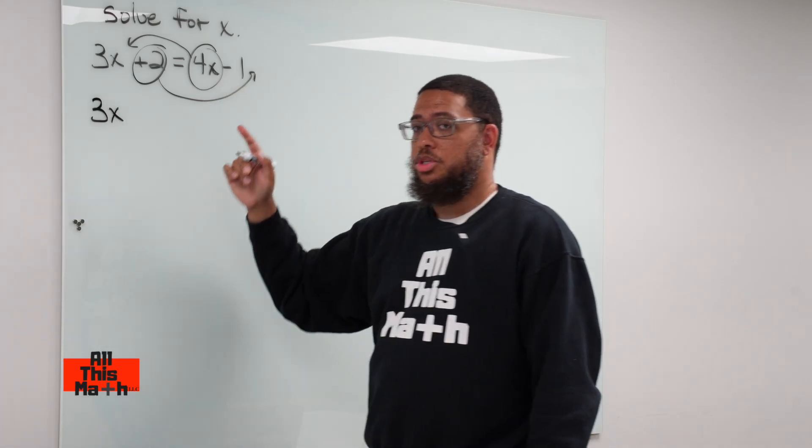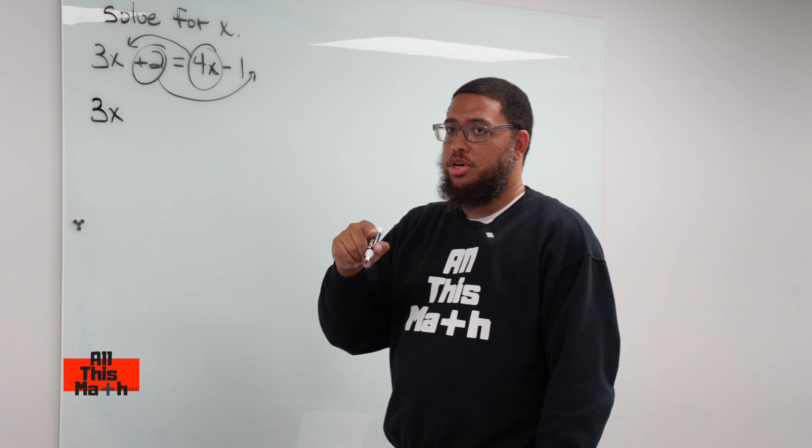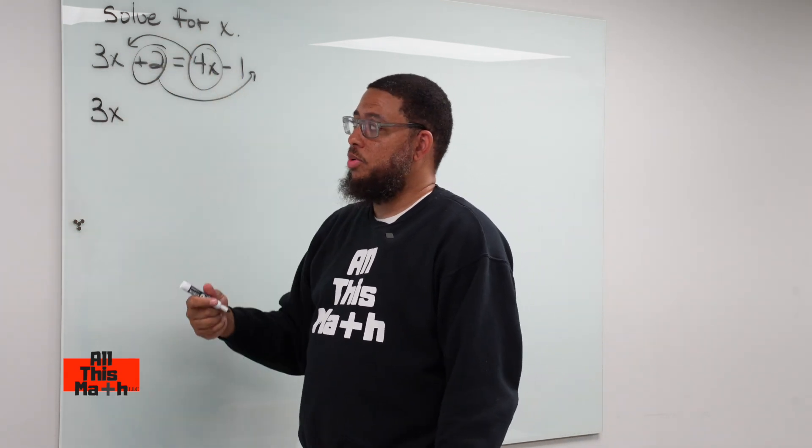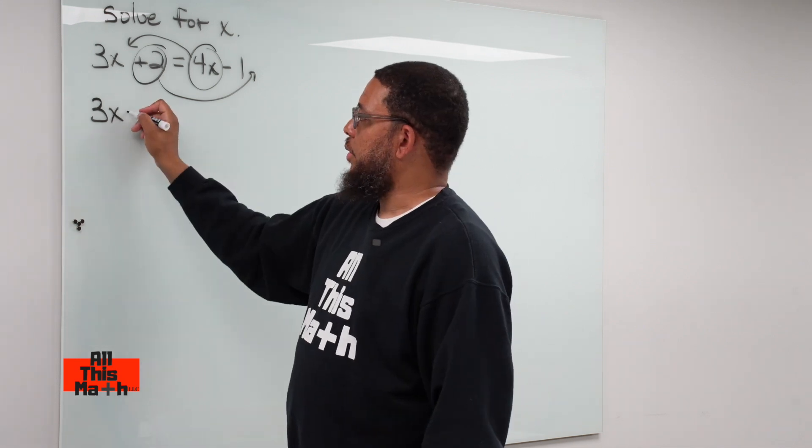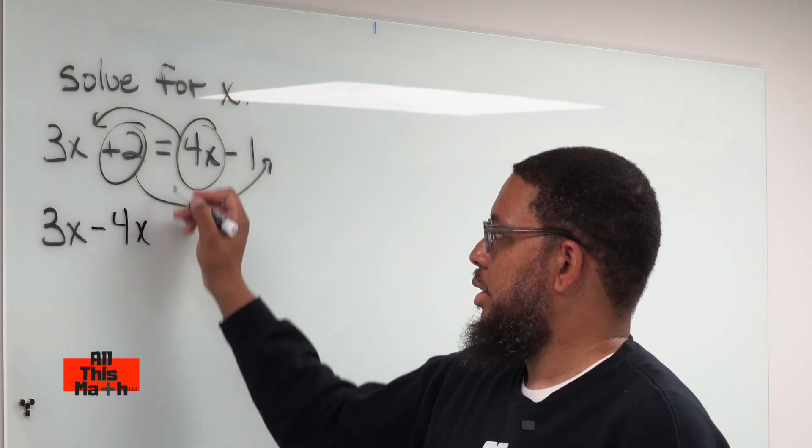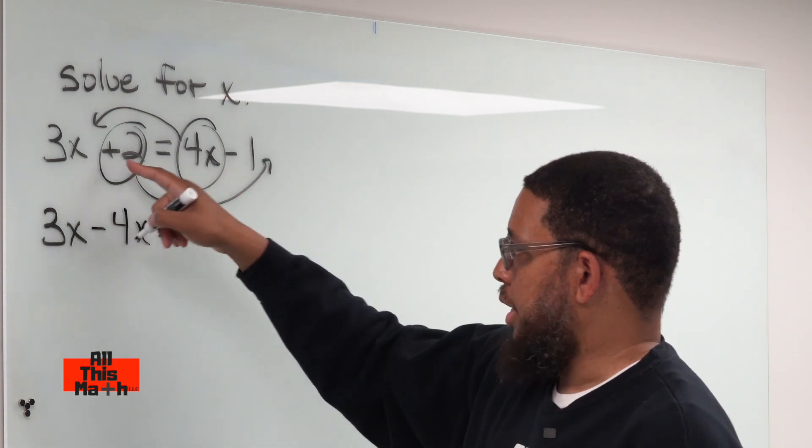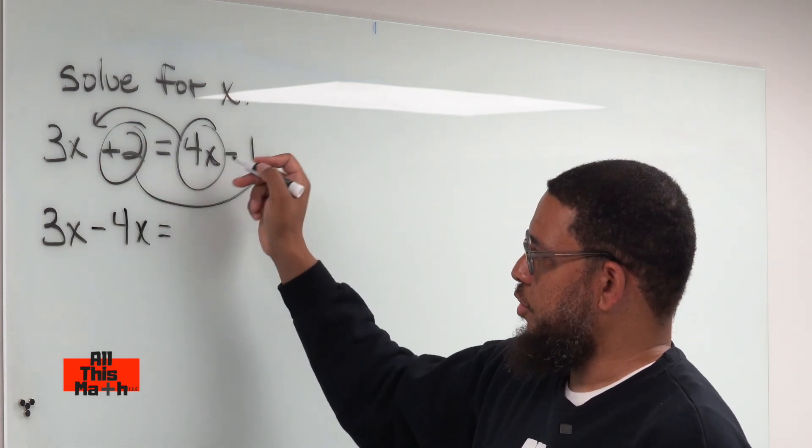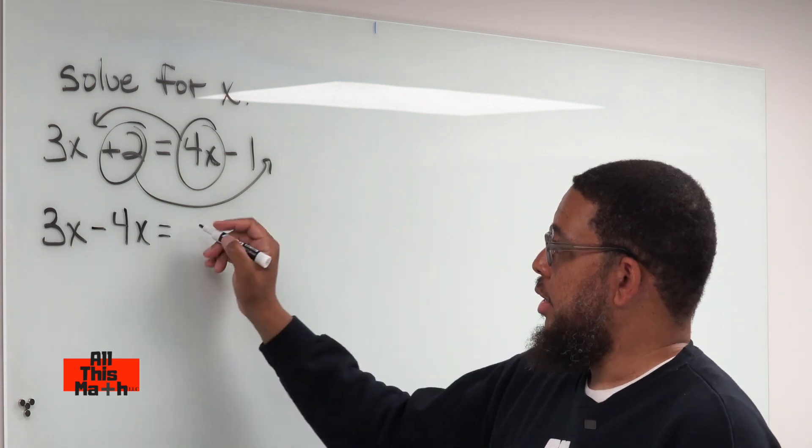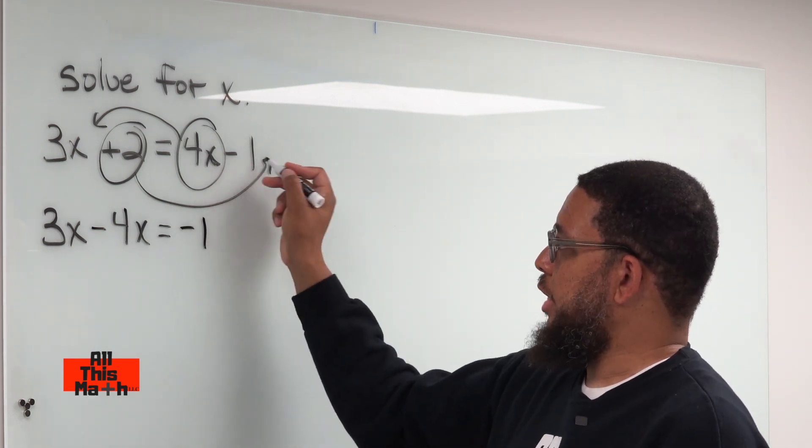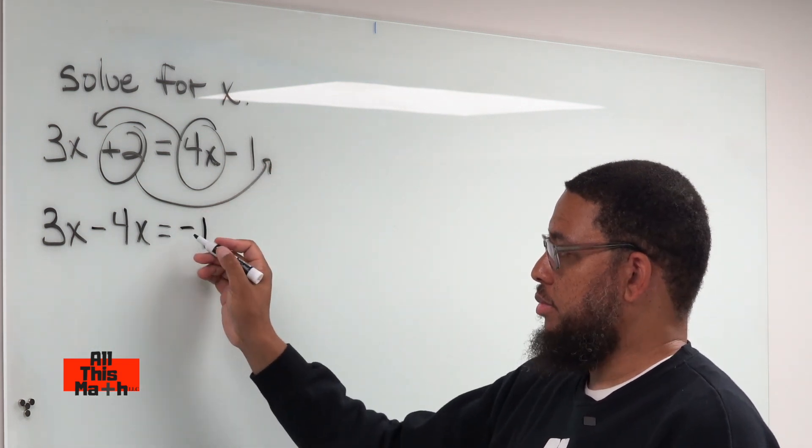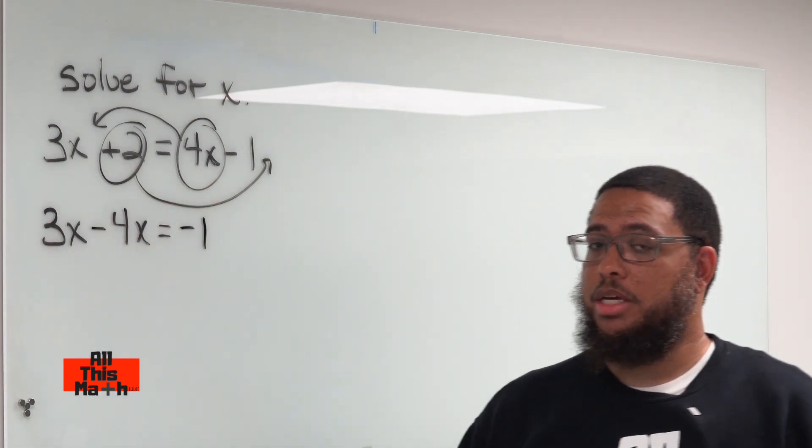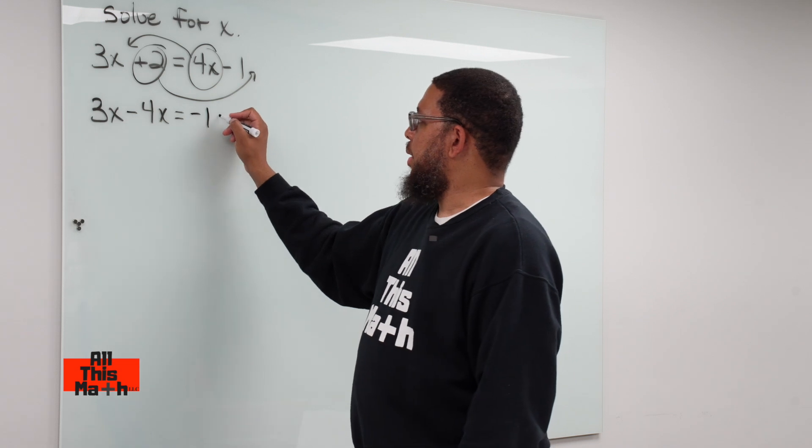Now, another thing though. When you transpose, the sign of that term must change. So this positive 4x on the right side, when it moves to the other side or gets transposed, now it becomes negative. So now we have 3x minus 4x. Bring the equal sign down, and this 2 gets moved over. I'm going to write the negative 1 first, because it was a minus 1 right here. When I move the positive 2 to the right side, now it becomes negative 2. So now I have minus 2.